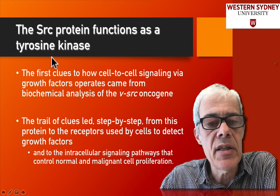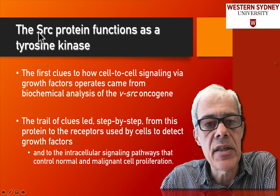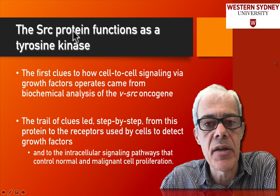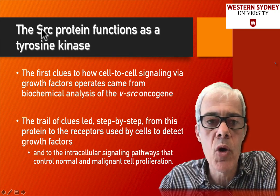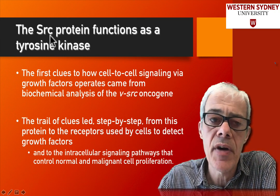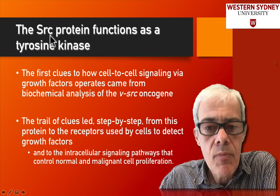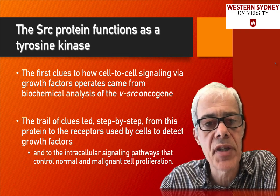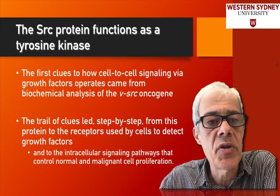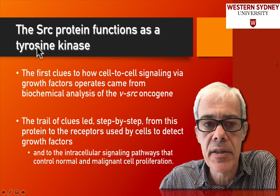One of these important signaling proteins is the Src protein. This was one of the first oncoproteins identified, and it became apparent when people looked at the function of Src that it was a tyrosine kinase.